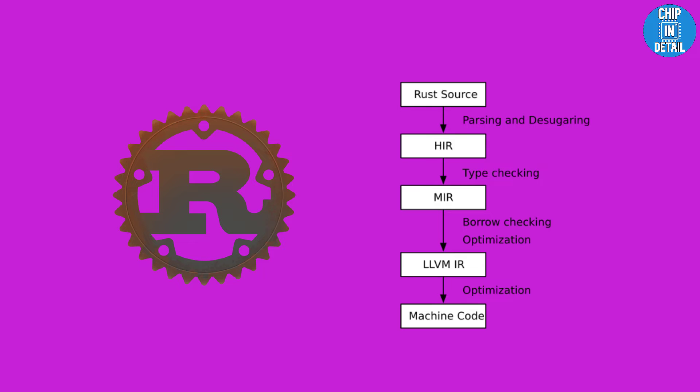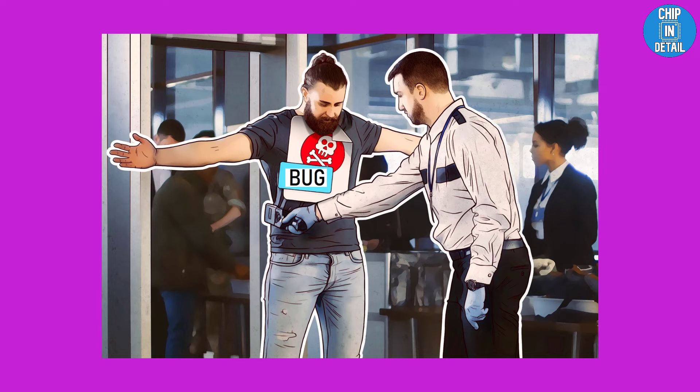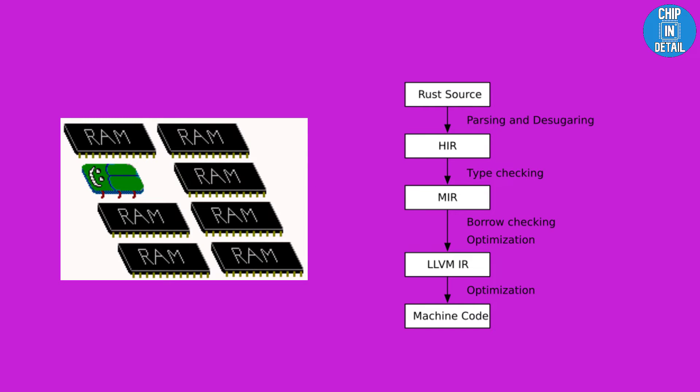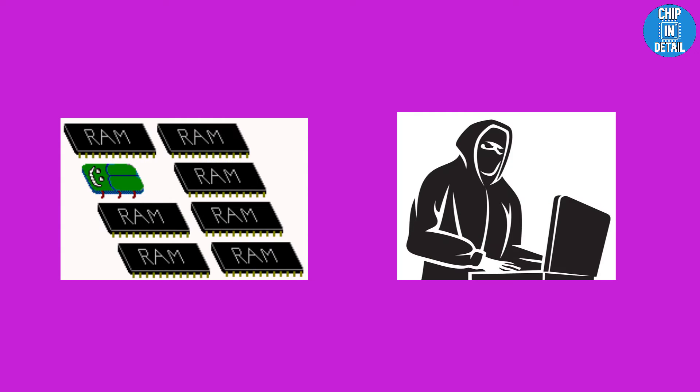In Rust, the compiler plays a gatekeeper role by refusing to compile code with the three main types of bugs. First, Memory Bugs: the Rust compiler is designed to enforce memory and resource ownership, ensuring that any misuse of memory is caught at compile time. Furthermore, in a world where 70% of all security vulnerabilities are the result of memory bugs, safe Rust reduces the attack surface for IoT device hackers.